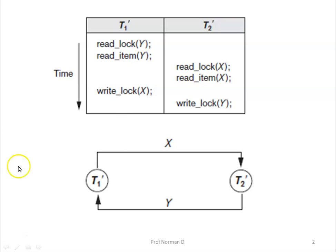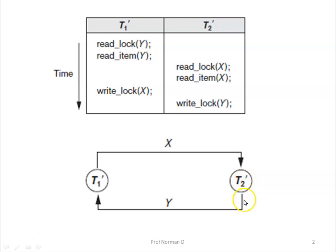We will see a simple example of deadlocks. Here we have two transactions T1 and T2, and both are deadlocked in a partial schedule. T1 is in the waiting queue for item X which is locked by T2, while T2 is in the waiting queue for Y which is locked by T1. So neither T1 nor T2 can access X and Y. Looking at the wait-for graph, T1 is requesting X held by T2 and T2 is requesting Y held by T1, indicating a deadlock between them.